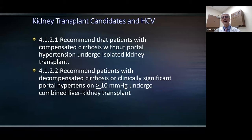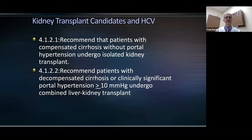We incorporated this information into the guidelines: patients with compensated cirrhosis without portal hypertension should undergo isolated kidney transplant. Even though they're cirrhotic, they don't meet conventional criteria for liver transplant, so we recommend isolated kidney transplant. If patients have clinically overt liver disease with complications such as varices or ascites, or portal pressure is already greater than 10 mmHg, our recommendation is that the patient undergo a combined liver-kidney transplant.